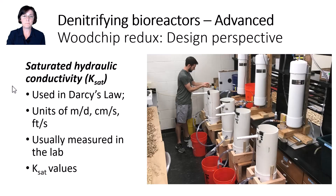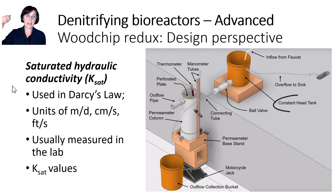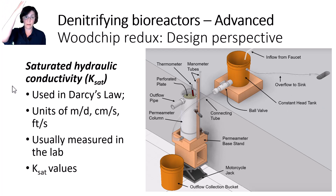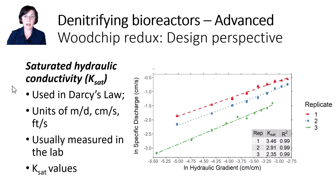How is KSAT measured? Woodchips are packed into what's called a permeameter. The permeameter has two manometers, where a difference in water height, or a head drop across the column, can be measured. The constant head tank keeps a constant head of water pressure pressing down on the woodchips as you flow water up through them, and the water level in the constant head tank is adjusted to speed up or slow down the flow rate, which also changes the head drop measured in the manometers. You measure flow rate coming out and the corresponding manometer values to make a graph of specific discharge versus hydraulic gradient. The slope of these graphs is your KSAT value.